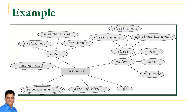Ab hum is ER model ki strength ko is slide se samajhte hain. Aap is picture pe gaur kijiye aur samajhne ki koshish kijiye ki isme se aapko kya information pata chal rahi hai. Isme woh sare symbols hain jo abhi humne discuss kiye hain. Customer entity set ko batata hai. Customer ID underline kiya gaya hai aur oval sign ke saath dikhaya gaya hai — matlab customer ID ek key attribute hai. Name ko further branches mein break kiya gaya hai — customer ka name composite hai, jisko first name, middle initial, or last name mein break kiya ja sakta hai.